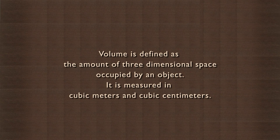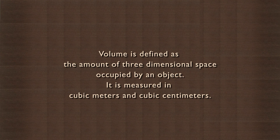An irregular solid's volume can be measured through the displacement of water method. But what about an irregular solid like a wooden log which floats on water because it is light? How can we measure its volume? Volume is defined as the amount of three-dimensional space occupied by an object. It is measured in cubic meters and cubic centimeters. Let us find the volume of a solid that floats on water.